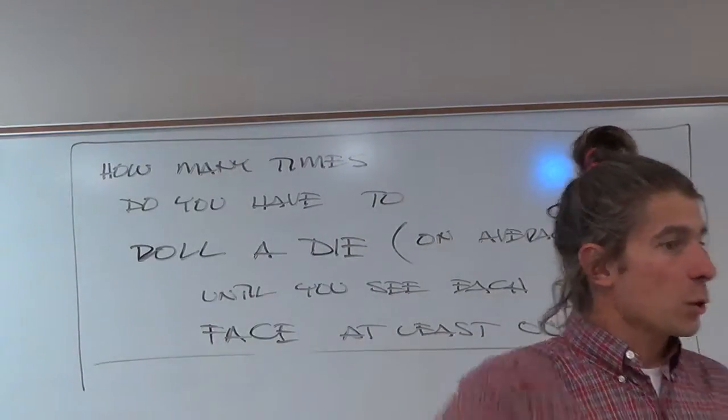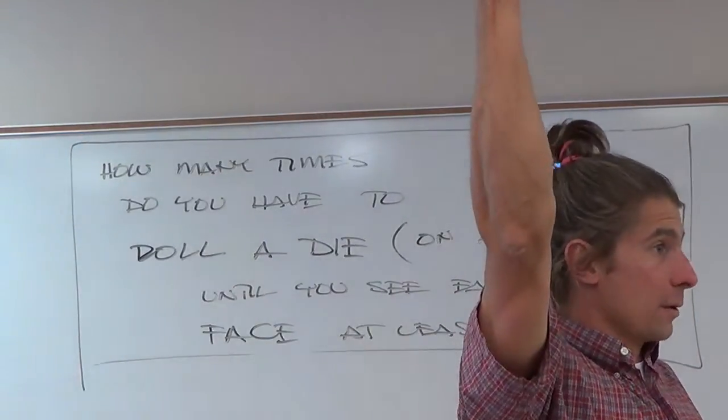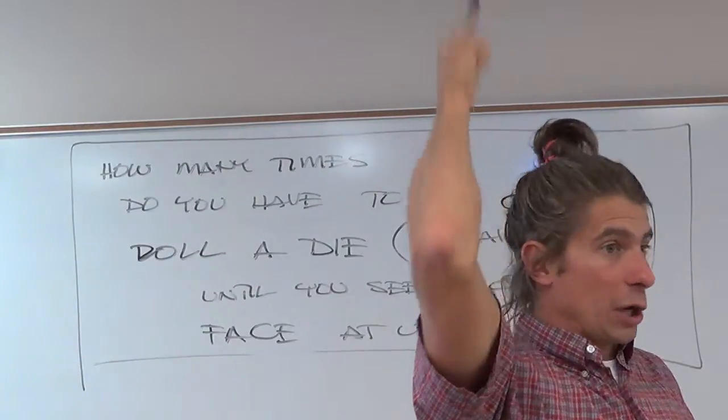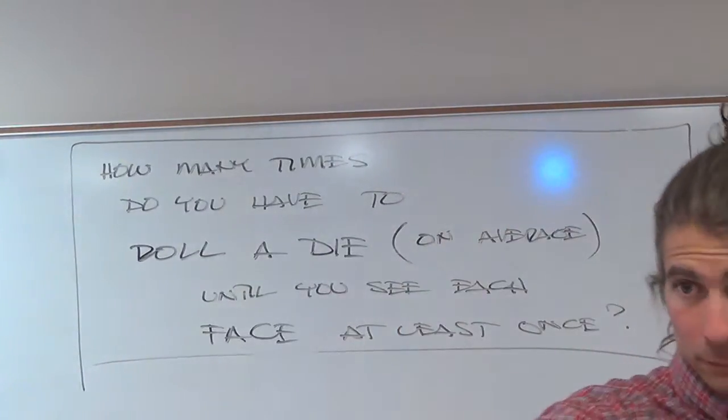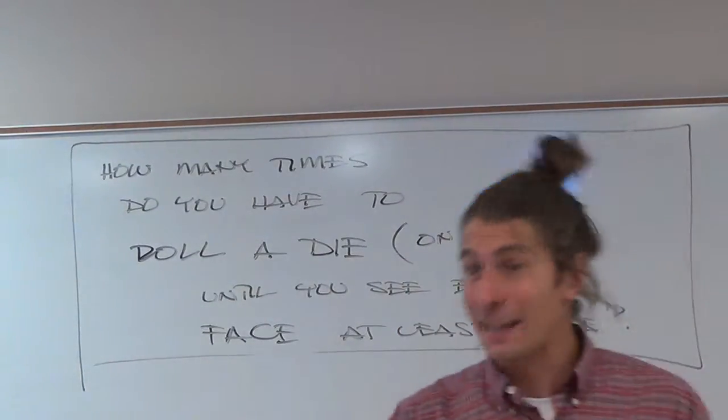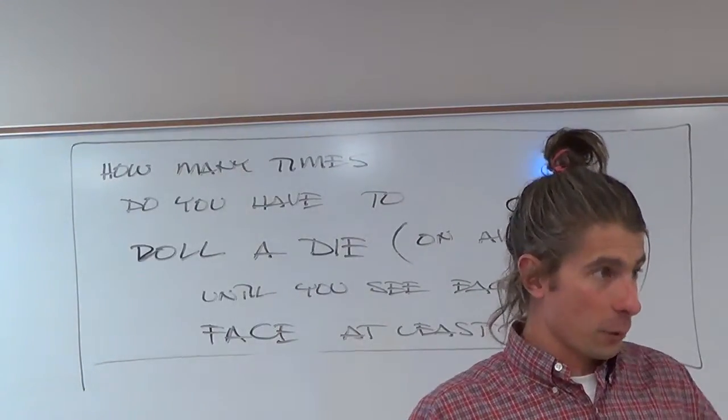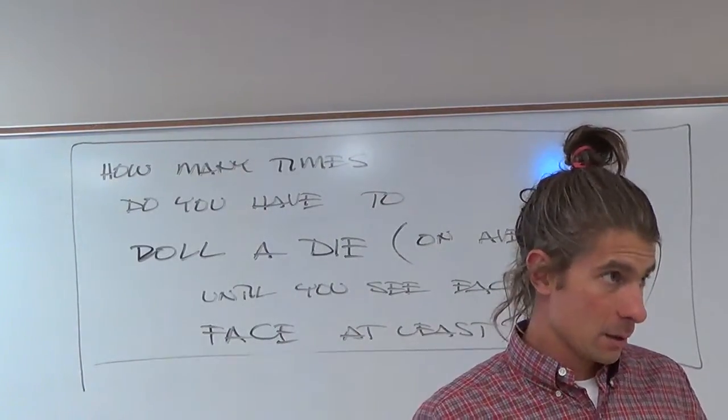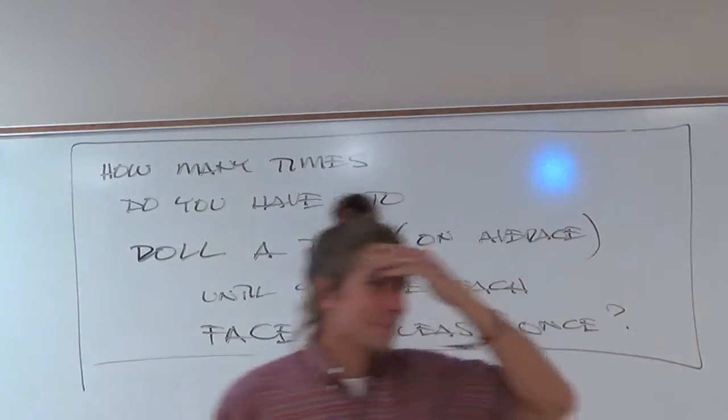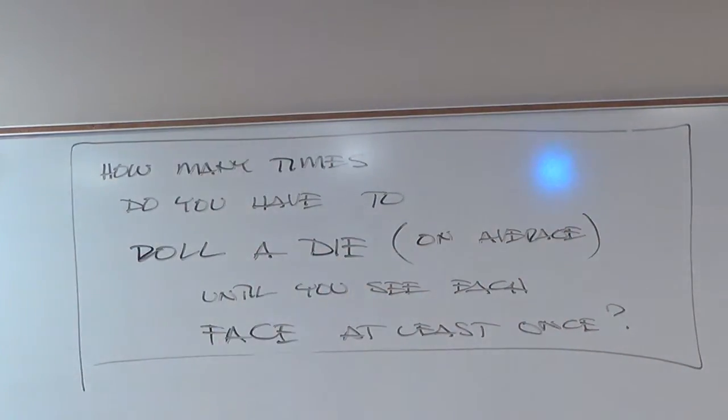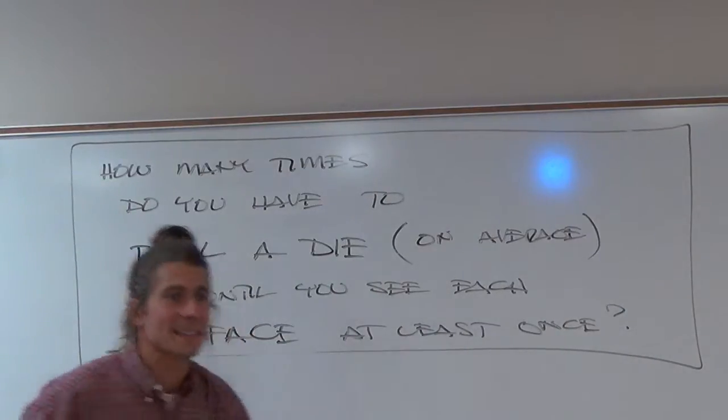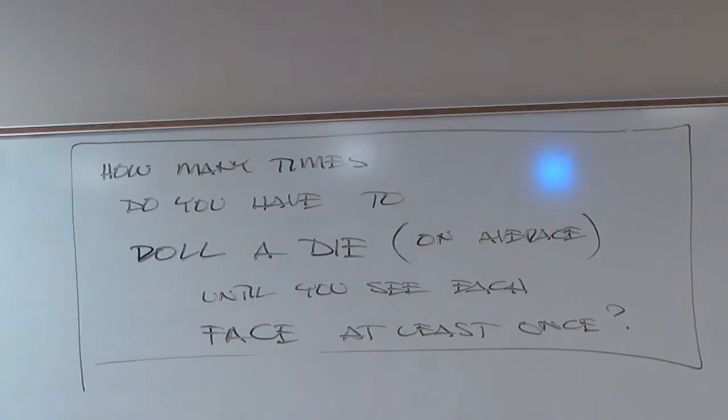All of you are paying attention. Next question I have is we're going to repeat the experiment with a die though. So we have a six-sided coin now instead of a two-sided coin. So before you start flipping, before you start rolling, I want some guesses. How many times do you think we're going to have to roll this die until, on average, we see each face at least one time?